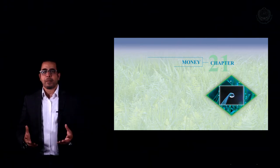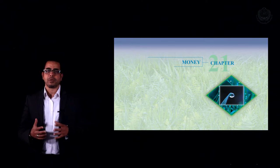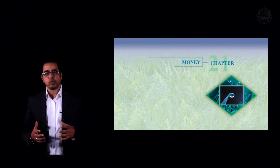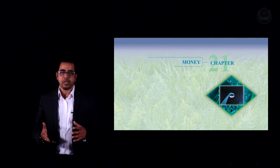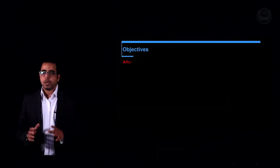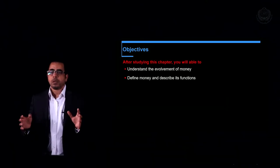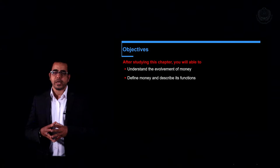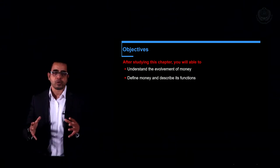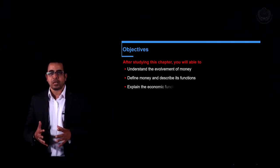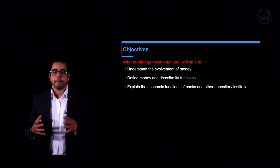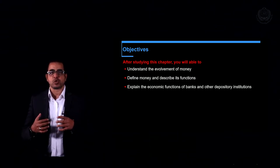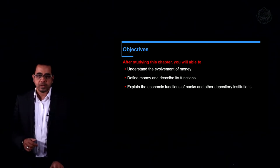In order to talk about monetary policy and understand it, we have to understand what we mean by money from an economic perspective. Welcome to our new chapter talking about money. In this chapter we're going to talk about the evolvement of money, how money developed into the modern shape we see today, the definition and functions of money, and deposit institutions — how banks operate in the economy and their role in creating money.